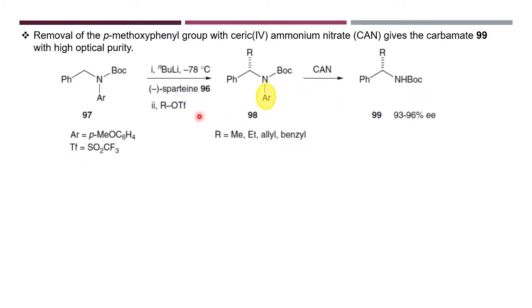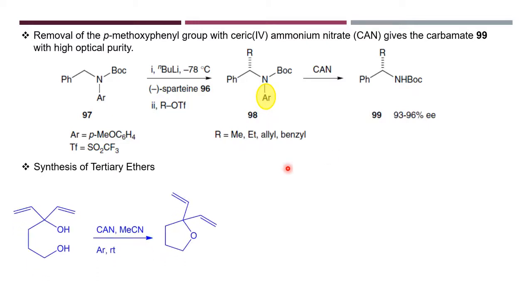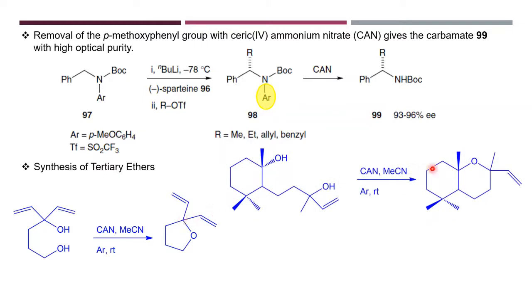Here the Ar group is a para-methoxyphenyl (PMB) group. On using Ceric Ammonium Nitrate, this unit is cleaved and the Ar group is released. A proton joins to produce a product of high optical purity — this is the synthesis of tertiary ethers. A diol is converted to an ether where the carbon is a tertiary carbon.